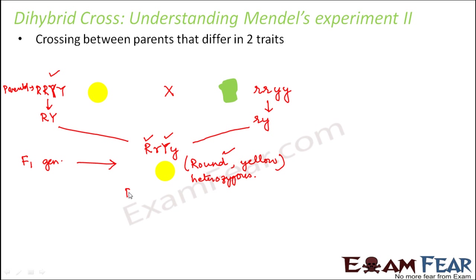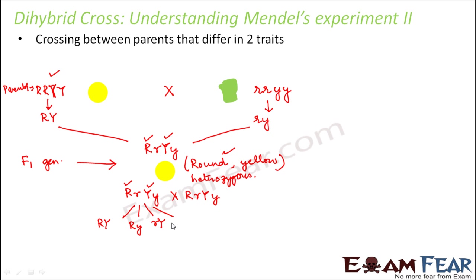When the F1 was crossed again — basically the F1 generation was self-crossed, crossed amongst each other — what are the possible gametes that can be produced? This heterozygous F1 can produce four gametes: capital R capital Y (round yellow), capital R small y (round green), small r capital Y (wrinkled yellow), and small r small y (wrinkled green). So these are the four possible gametes that can be formed from this heterozygous F1.